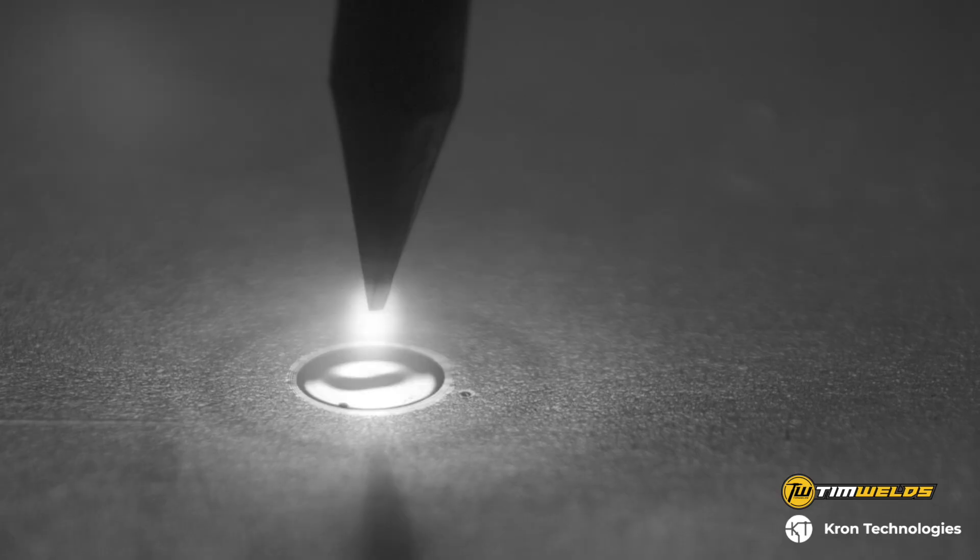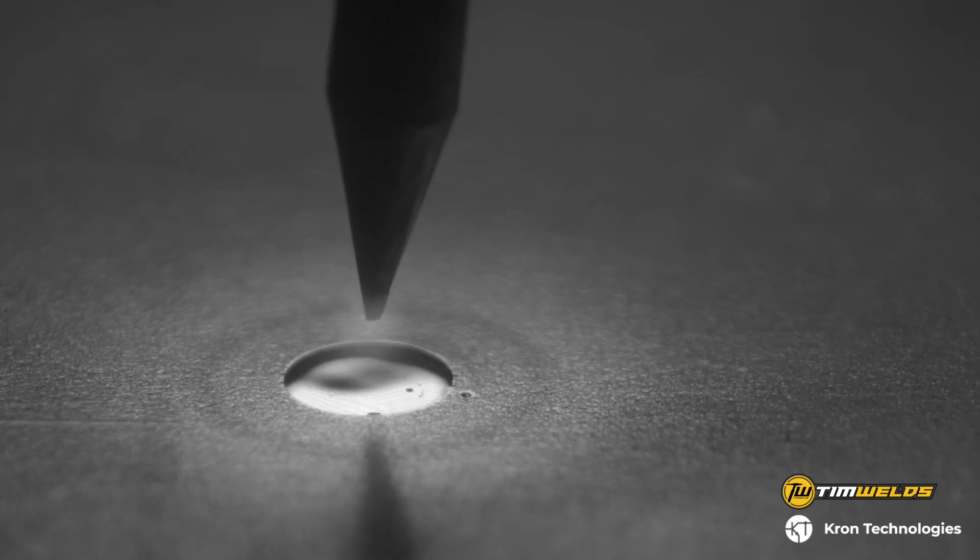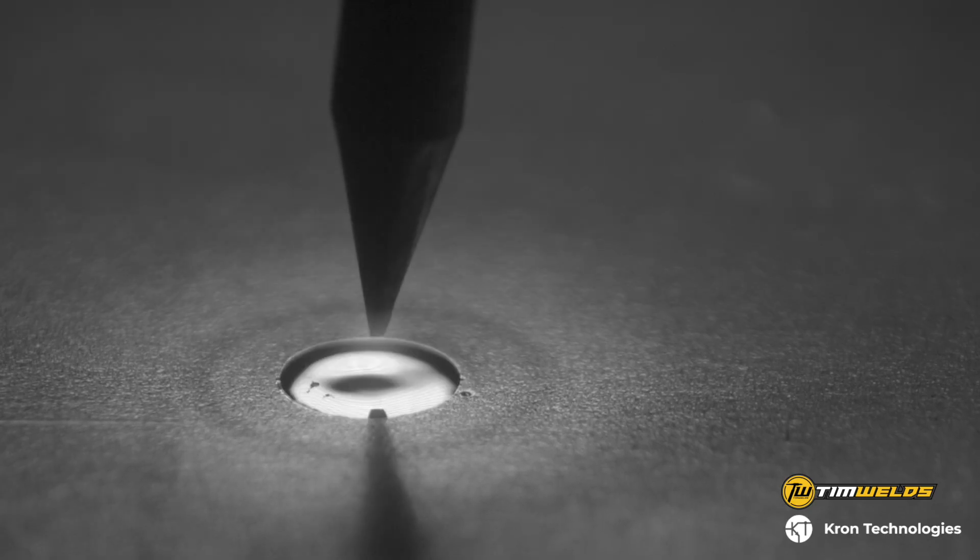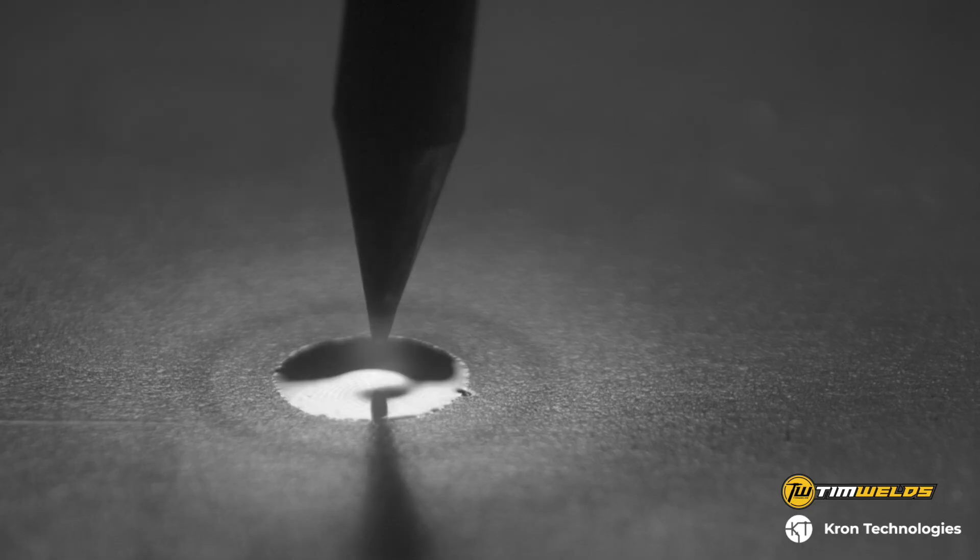This is pretty common to do to avoid distortion. But if we take a closer look notice how even though this pulsing happens 30 times every single second, with each pulse you can actually see the weld puddle grow and oscillate. It's amazing to see it drive that.